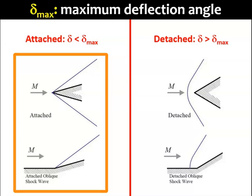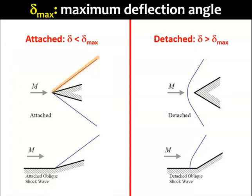When the oblique shock is an attached shock, its angle beta is uniform throughout, starting from the leading edge of the object.